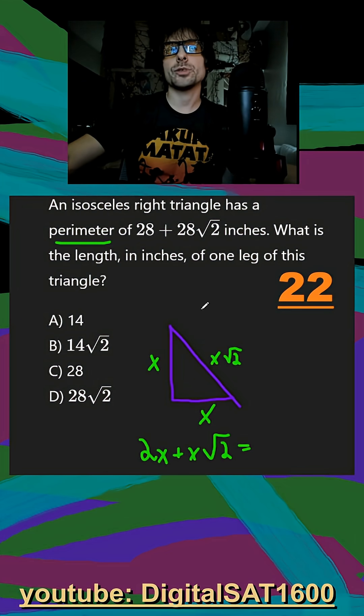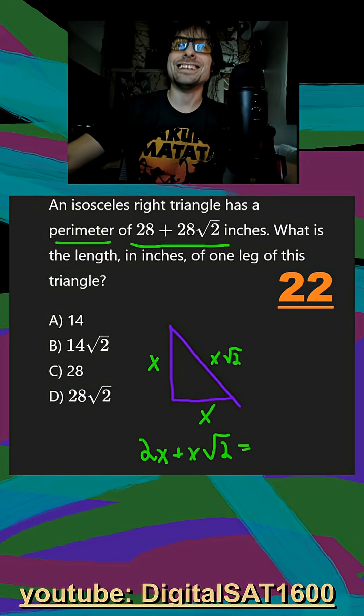And they give us a numerical value. So I can actually just set this equal to their numerical value in Desmos, and it'll automatically solve for x for us.